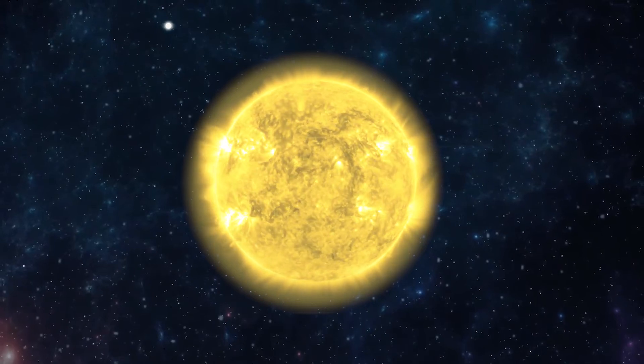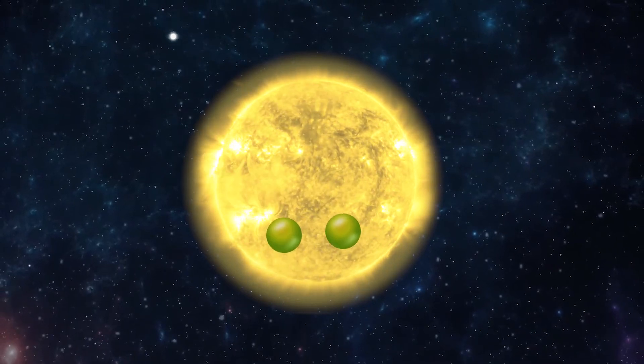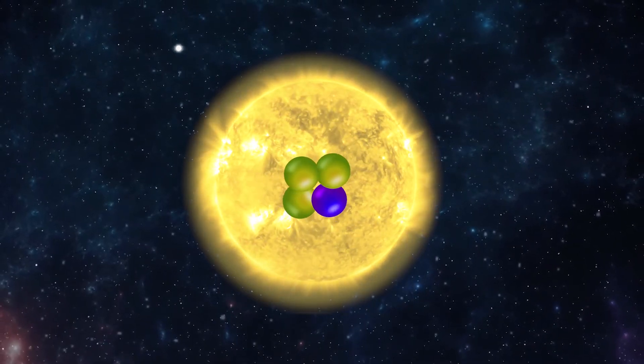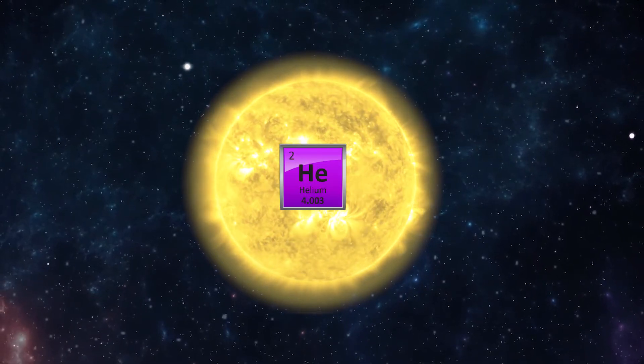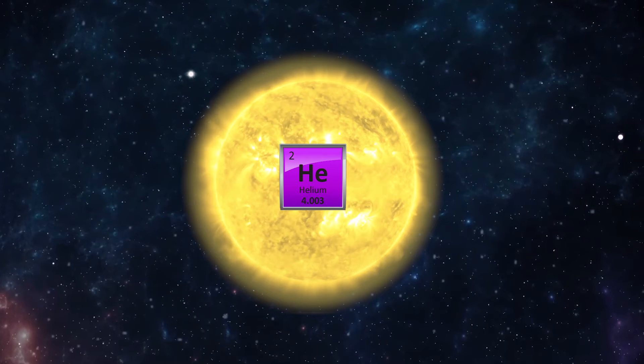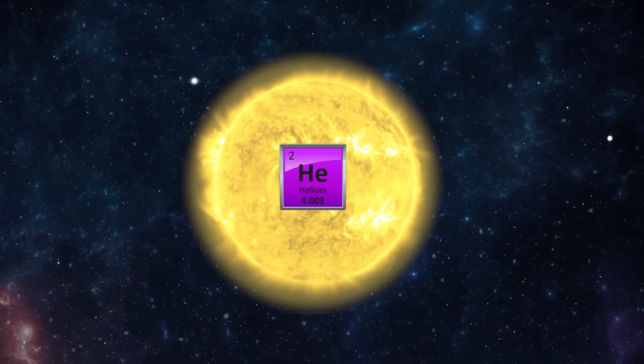Stars are initially balls of hydrogen that under their massive gravity exert enormous pressure that fuses hydrogen into helium. Once all the helium is used up, about 10 million years, the star combines these to make the heavier elements.